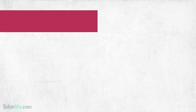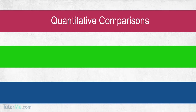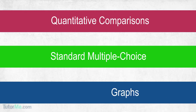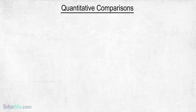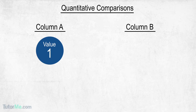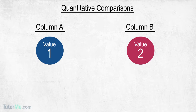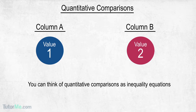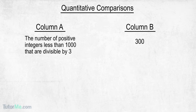The math section consists of three types of questions: quantitative comparisons, standard multiple choice, and graphs. They are designed to test your ability to solve problems, not to test your mathematical knowledge. Quantitative comparisons are the most common math questions. Generally, these require much less calculating than multiple choice questions, but they can be trickier. You can think of quantitative comparisons as inequality equations — your job is to determine whether the correct symbol to compare columns is less than, greater than, or equal to. Here's an example of what one will look like.